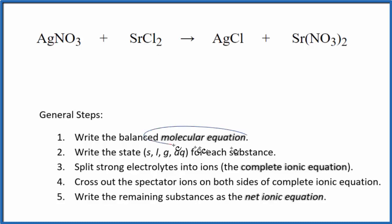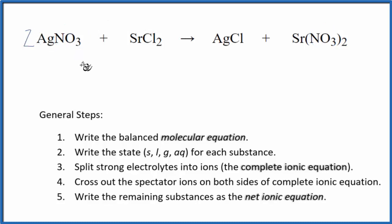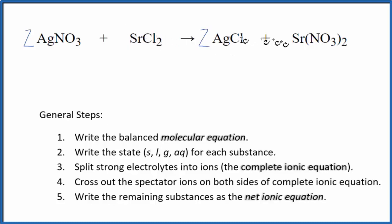First thing we need to do is balance the molecular equation. I can see there are two nitrates here and only one here, so I'm going to put a two in front of the AgNO3. Now the nitrates are balanced, two silver atoms, so let's put a two here. Two silvers, those are balanced. Now I have two chlorines, two chlorines, strontium and strontium. That's the balanced molecular equation.